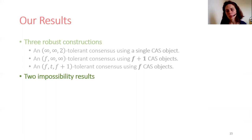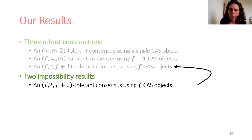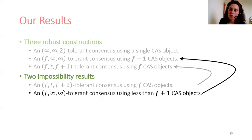In addition to these three constructions, we proved that our constructions are optimal in terms of object redundancy. Meaning, given the bounds on the number of faulty objects, faults per faulty object, and the number of executing processes, one cannot use fewer CAS objects. Using a covering argument, we proved that when the number of faulty objects is bounded by F and the number of faults per faulty object is bounded by T, it is impossible to build a reliable consensus object using F objects when the number of processes is at least F plus two. Using an indistinguishability argument, we proved that when the number of faulty objects is bounded by F and the number of faults per faulty object is unbounded, it is impossible to build a reliable consensus object using fewer than F plus one objects for any number of processes.